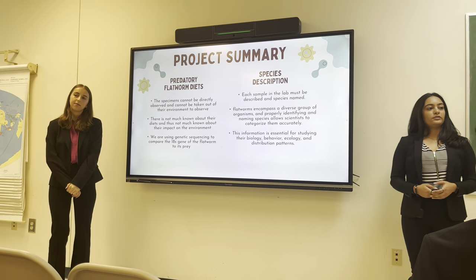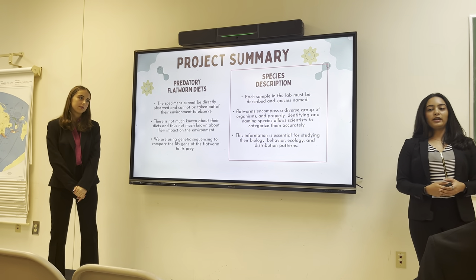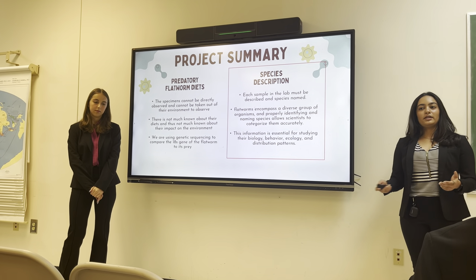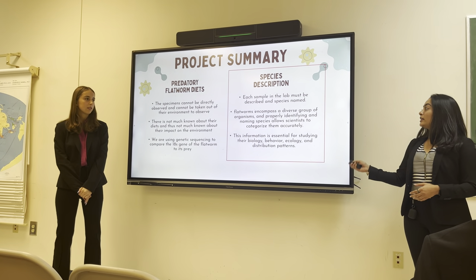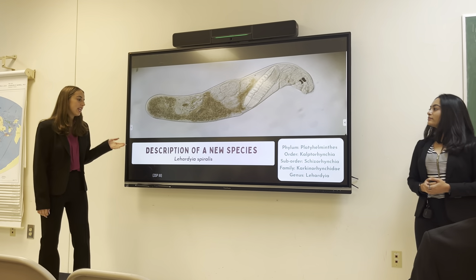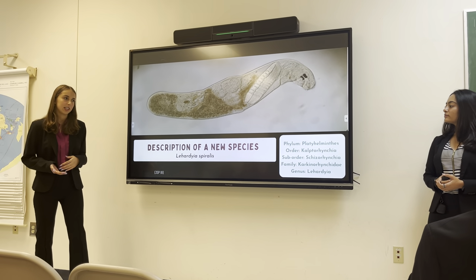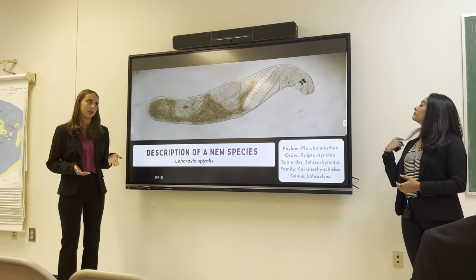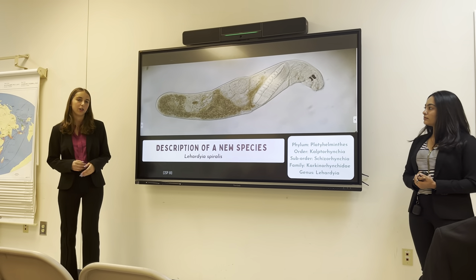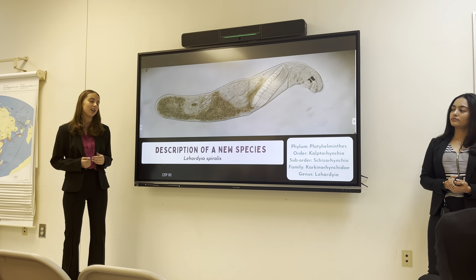Our second part of research: we were actually able to describe and name a species of flatworm, as there are not many currently described and named. Hopefully that description will be getting published either later this year or early next year. We named our new species Leihardia spiralis, after the spiral shape of the penis stylet, which is one of the main differences used to identify a new species. This is part of the genus Leihardia, where there are currently three other described species, and we are adding a fourth.